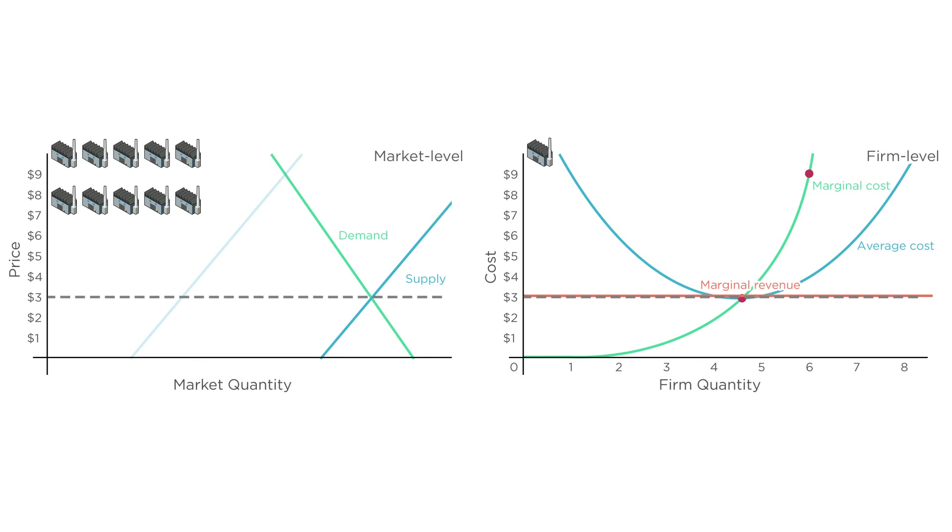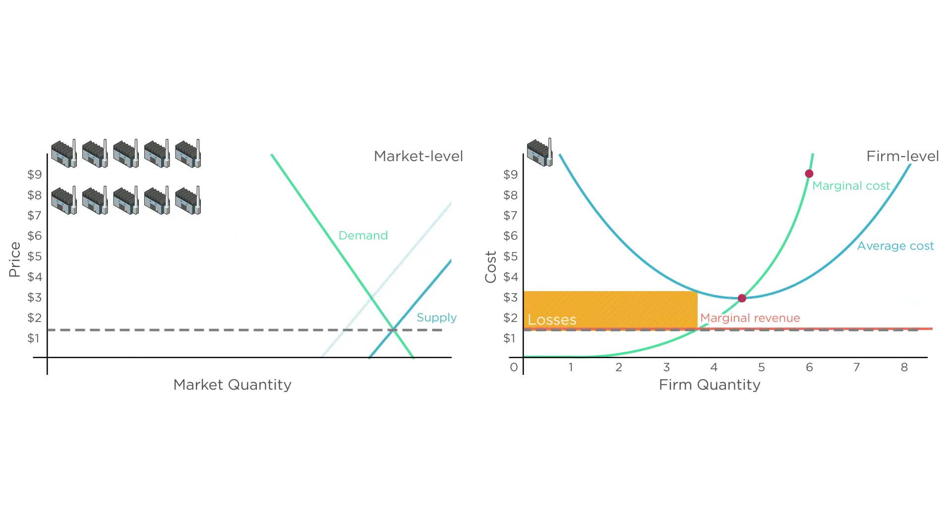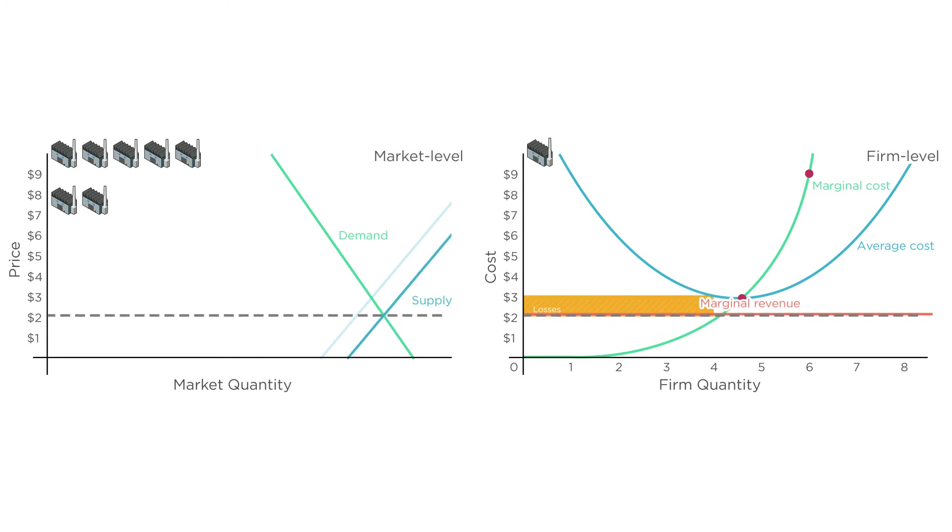We can also show the opposite situation. Imagine that price is below average cost. Now, the firm is losing money. In the long run, since firms are losing out, some will exit the market. On the left side graph, supply will shift to the left. Price rises, and eventually profits go to zero.